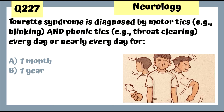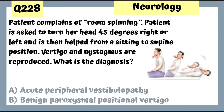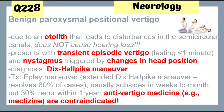Question 228: A patient with room spinning has vertigo and nystagmus reproduced on turning the head 45 degrees — that's benign paroxysmal positional vertigo (BPPV), due to an otolith. It presents with transient episodic vertigo and nystagmus with no hearing loss. Do not give meclizine in BPPV — it's contraindicated. Question 229: A man with two distinct episodes of vertigo lasting more than 20 minutes, hearing loss, and tinnitus has the Meniere's disease triad. Treatment includes meclizine, diazepam, promethazine, and salt restriction for long-term prevention.